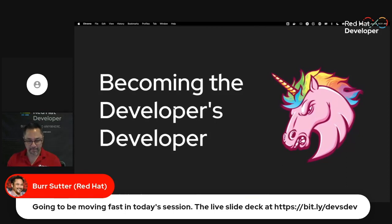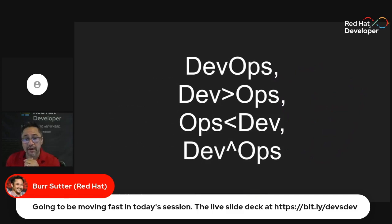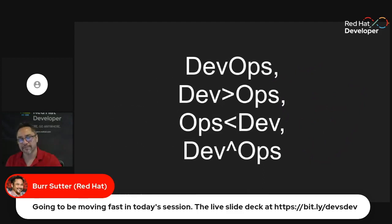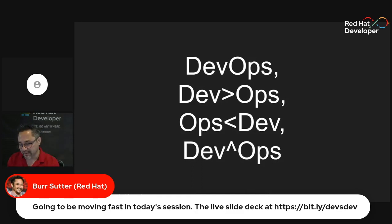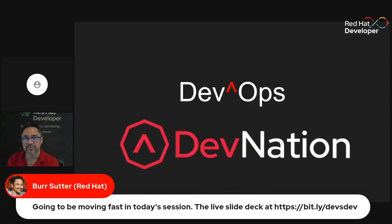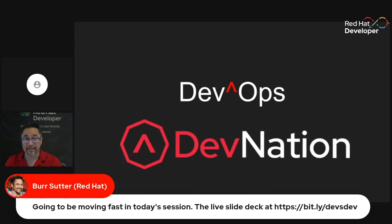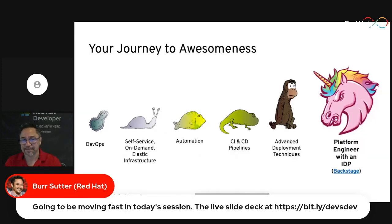Let's dive right in. One thing I'd like to mention is when it comes to DevOps, or specifically DevNation, and the icon that we use there — we came up with that icon for a reason. I like thinking in terms of DevOps. Some people might think of that as dev greater than ops, some as ops less than dev. But what about dev raised to the power of ops? That's what I like to think about. That's why I have that little caret there, which became part of our DevNation icon. Today we're going to talk about Dev, Sec, and Ops.